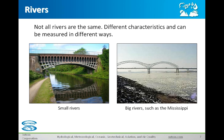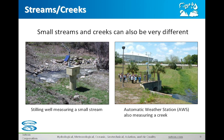The next slide shows some small streams and creeks. The picture on the left is a stilling well at a small little stream — however, this stream can get raging a bit more in the spring when there's runoff. This site also has a GOES antenna for telemetry, shooting data off to the GOES satellite. The picture on the right shows just a small creek and a weather station — you're probably never going to have a great deal of water flowing, making this a relatively easy site to measure.